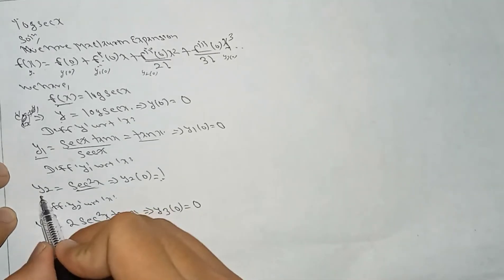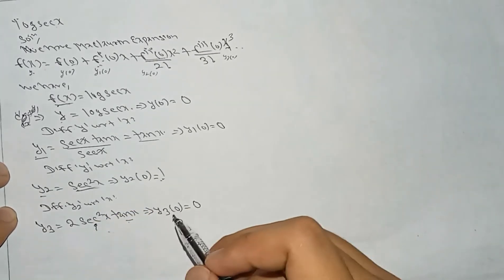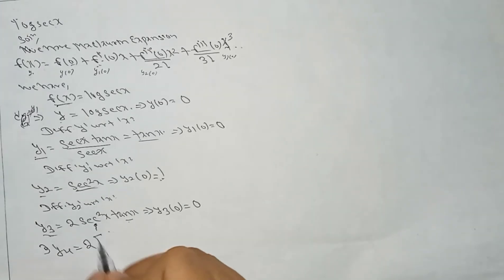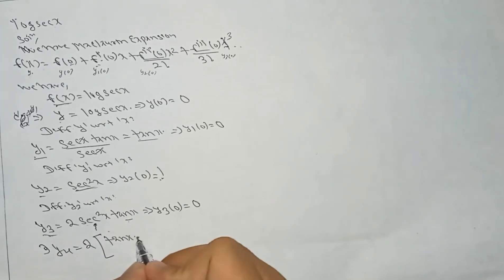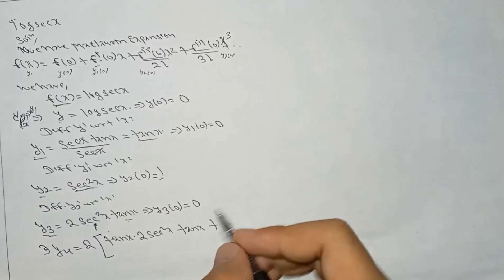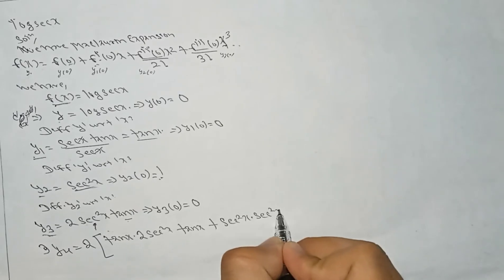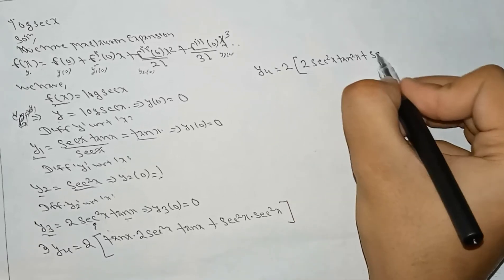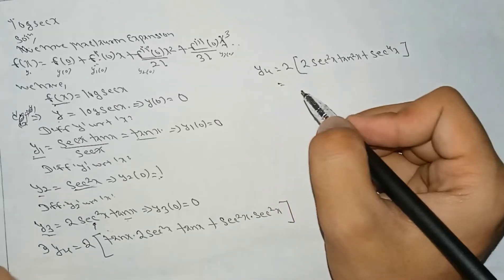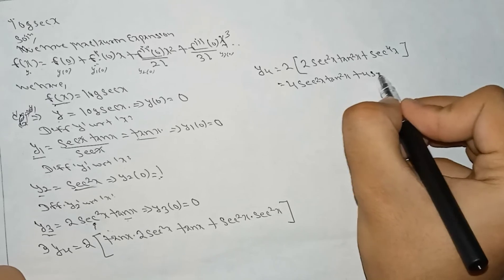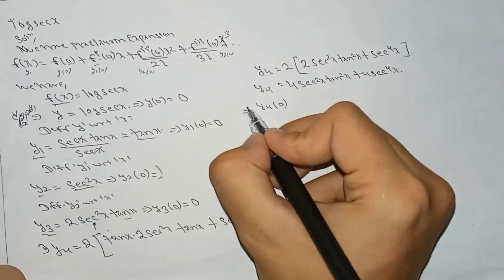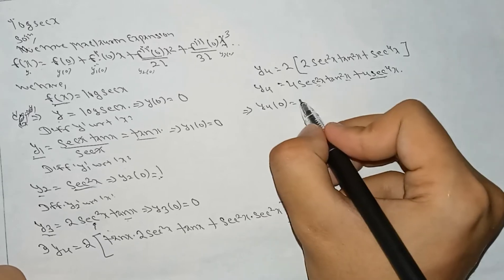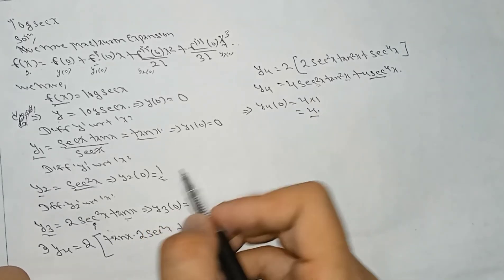We have only one non-zero term so far, so we need at least two or three finite terms. Differentiating y3 gives y4 = 2·sec²(x)·tan(x) + sec⁴(x), which simplifies to 4·sec²(x)·tan(x) + 4·sec⁴(x). So y4(0): tan(0) = 0 and sec(0) = 1, giving y4(0) = 4. Now we have at least two non-zero terms.